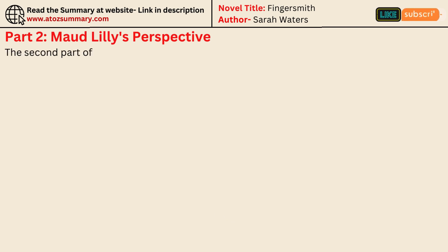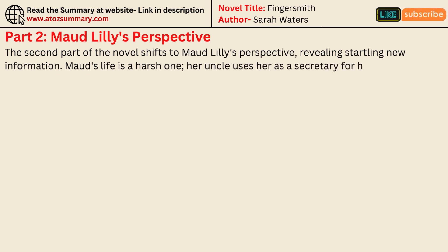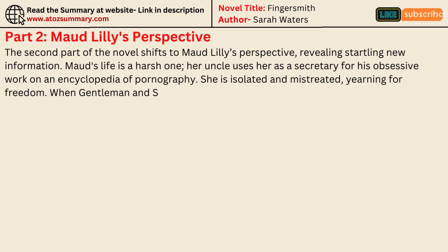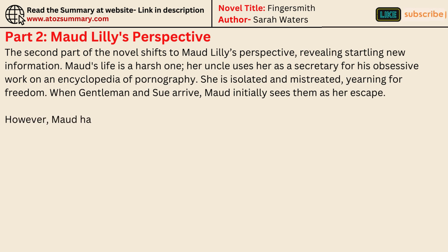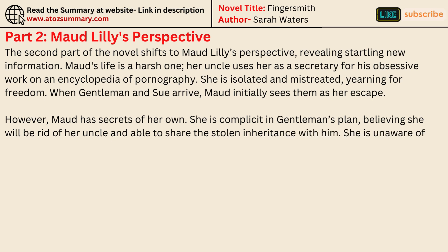The second part of the novel shifts to Maude Lilly's perspective, revealing startling new information. Maude's life is a harsh one — her uncle uses her as a secretary for his obsessive work on an encyclopedia of pornography. She is isolated and mistreated, yearning for freedom. When Gentleman and Sue arrive, Maude initially sees them as her escape. However, Maude has secrets of her own: she is complicit in Gentleman's plan, believing she will be rid of her uncle and able to share the stolen inheritance with him. She is unaware of Sue's true identity and intentions.